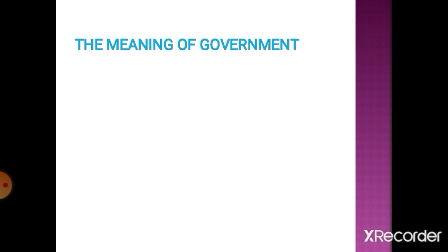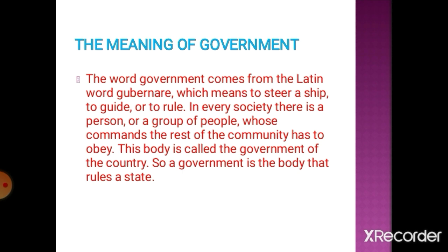The word government comes from the Latin word G-U-B-E-R-N-A-R-E, which means a person to control a country, or guide or rule a society or a country. In every society there is a person or group of people whose commands the rest of the community has to obey. This body is called the government of the country.